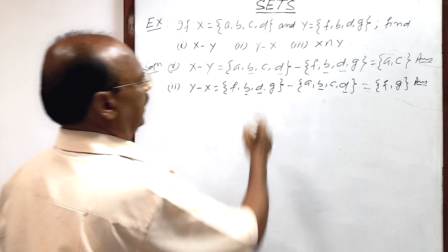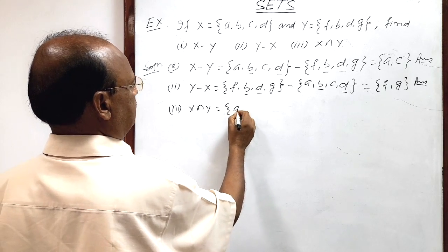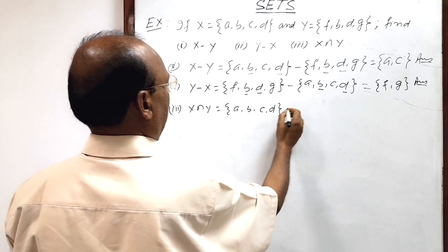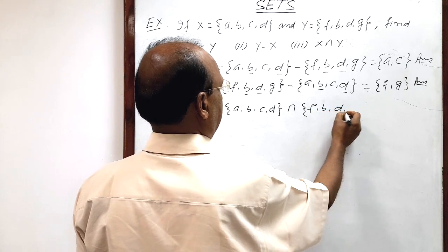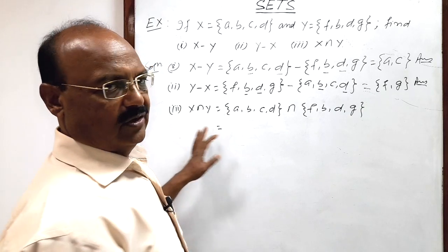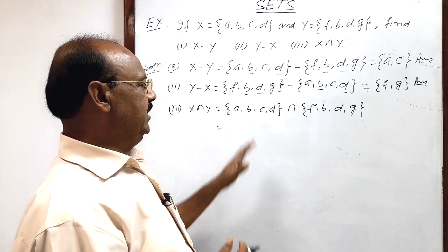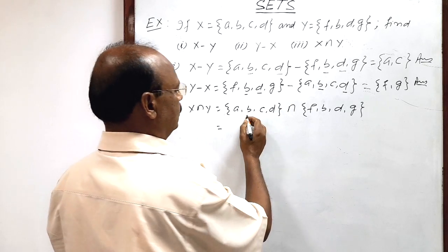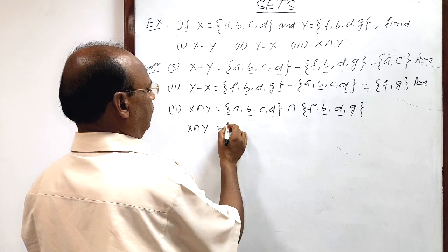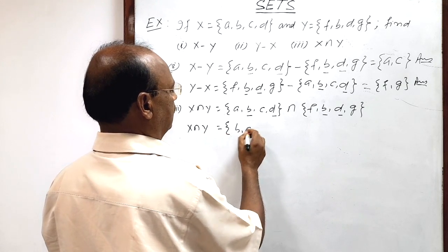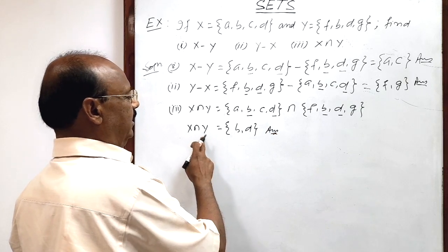For the third part, we have to find X intersection Y. Set X has elements a, b, c, d, and set Y has elements f, b, d, g. The intersection of two sets consists of only those elements which are common in both sets. B is common in both sets, and d is also common in both sets. So X intersection Y is a set having elements b and d — only the common elements. That is the answer.